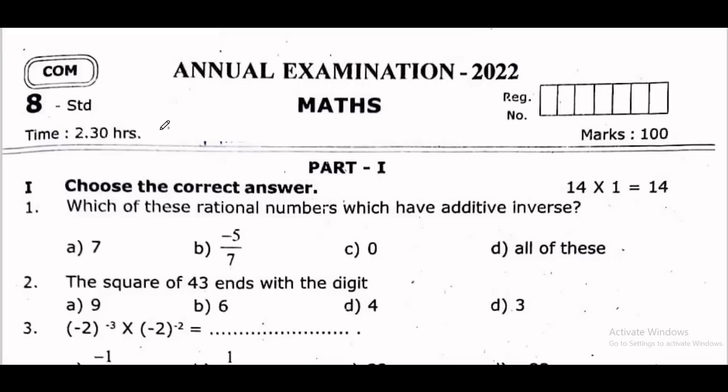First, Part 1: Which of the following rational numbers have an additive inverse? So, all of these.